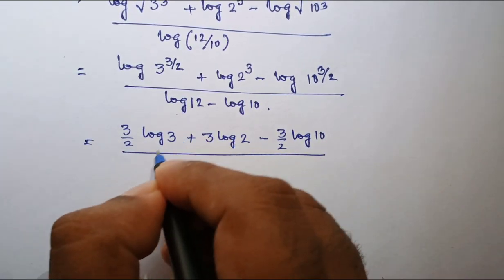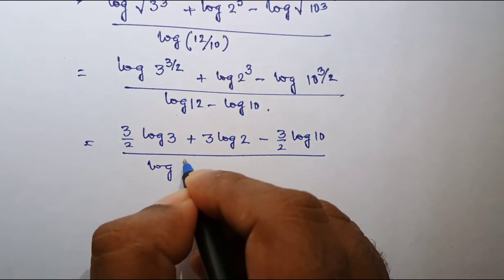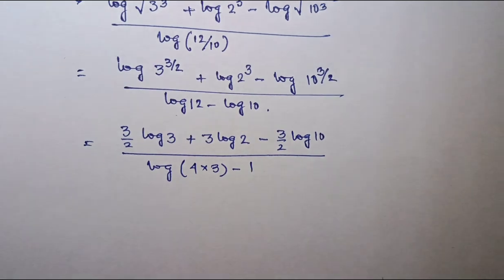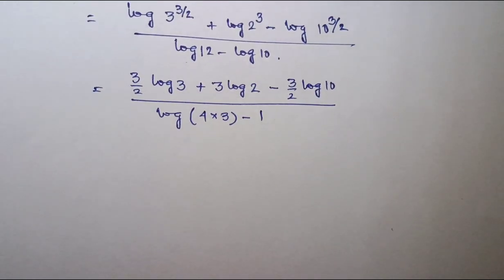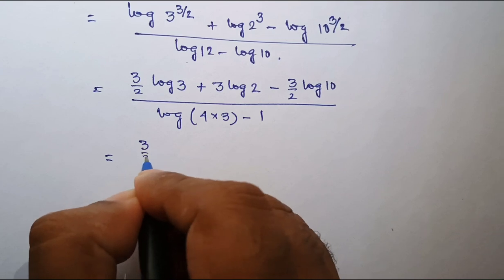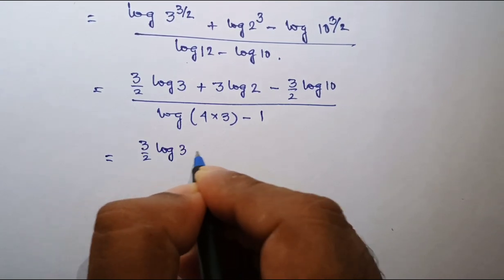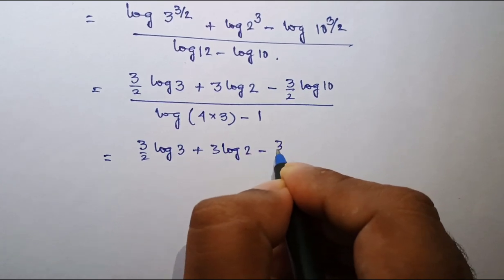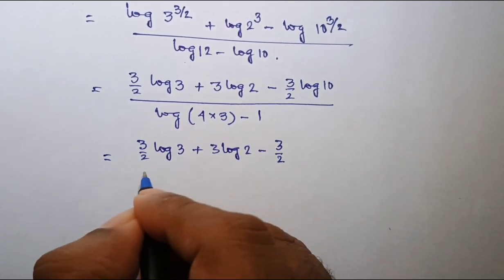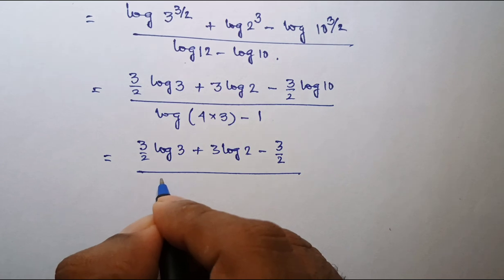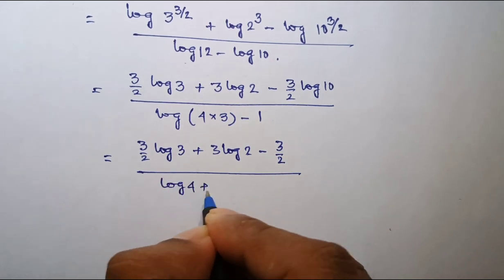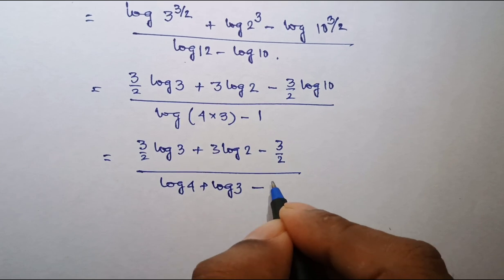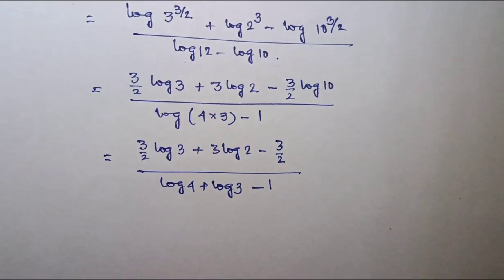Whole divided by log of 4 into 3 minus log 10 — since the value of log 10 is 1. The next step will be 3 by 2 log 3 plus 3 log 2 minus 3 by 2. It can be written as log 4 plus log 3, since log ab equals log a plus log b, minus 1.